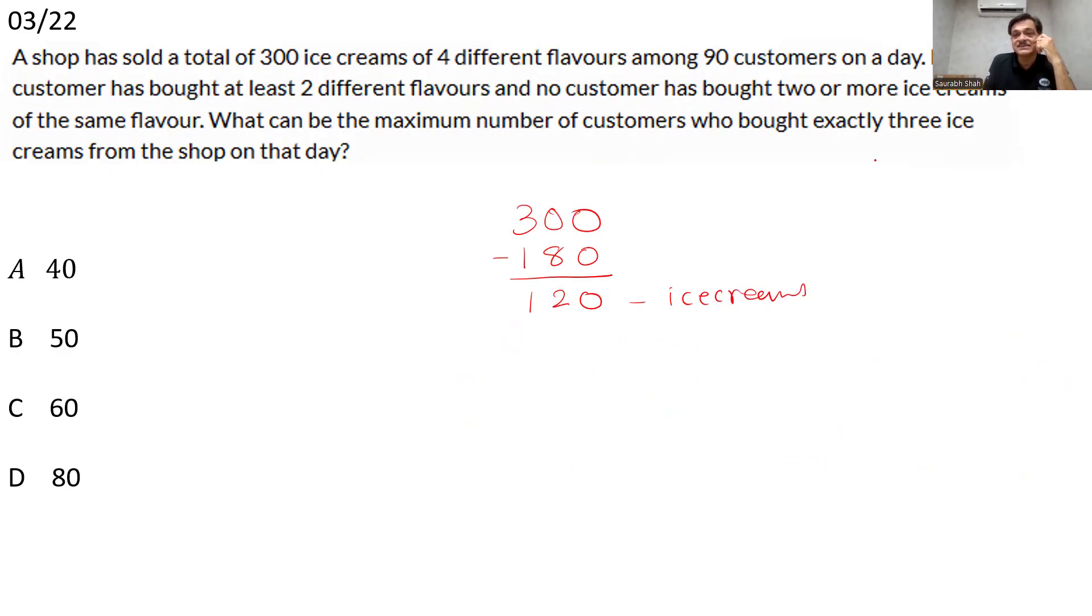There are 90 customers. We want to maximize exactly three. So let all the 90 still purchase one more ice cream, one more flavor. So again 90 flavors are purchased. 90 ice creams are purchased. We still are left with 30 ice creams. And all 90, that situation is all 90 have exactly three.